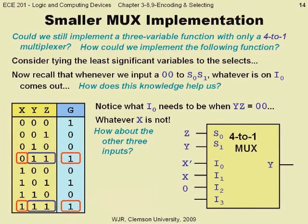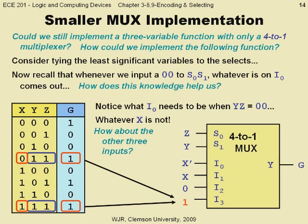For y,z equal to 1,1, the output should be a 1 no matter the value of x, so we put a 1 on input i3. Notice that since our multiplexer has less circuitry inside, we must apply more complicated circuitry outside. Before, we only needed 0s and 1s; now we need x's and x-complements.